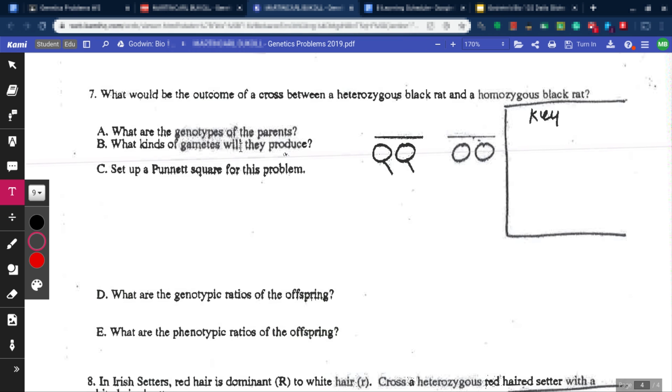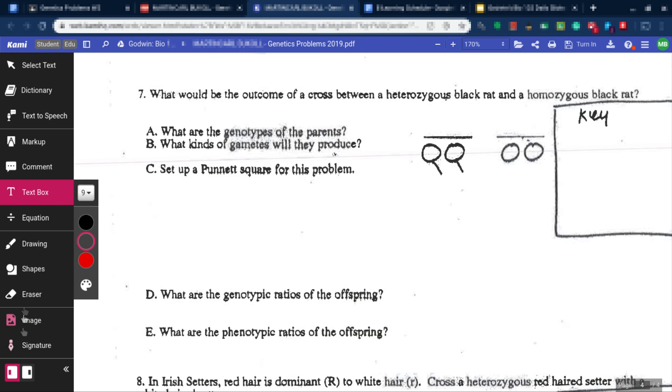Alright, so here we go. This is the Kami Editor. Now here we have lots of different options. You can actually go over here to Toggle Descriptions and it'll show you exactly what they do. So this is a text box. You'll likely be using Markup, Text Box, Drawing, Shapes, and Eraser.